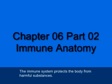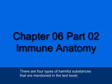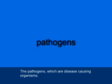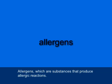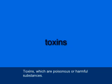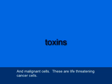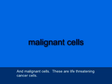The immune system protects the body from harmful substances. There are four types of harmful substances mentioned in the textbook: pathogens, which are disease-causing organisms; allergens, which are substances that produce allergic reactions; toxins, which are poisonous or harmful substances; and malignant cells, which are life-threatening cancer cells.